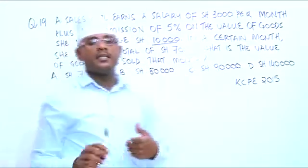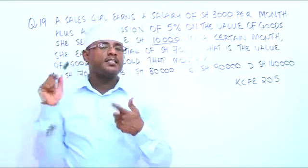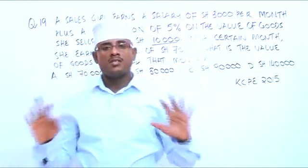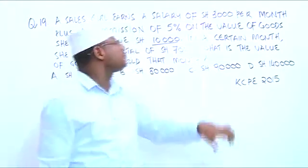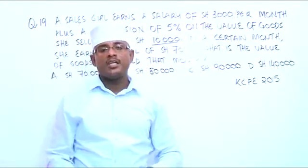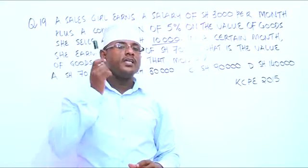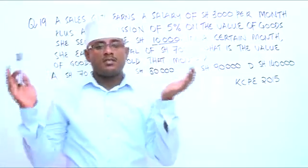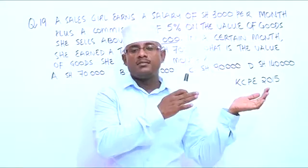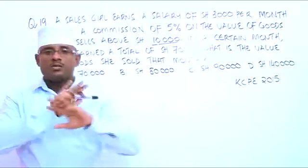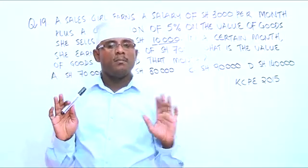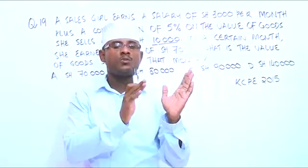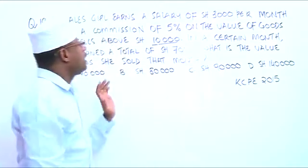This sales girl has a salary of $3,000 per month. Whether she does sales or no sales, she is going to get a salary of $3,000. But she is going to get commission as well, only if she sells goods above $10,000. Goods from $1,000 up to $10,000 — she is not getting any commission at all. But anything above $10,000, she gets 5% commission on that amount of sales.